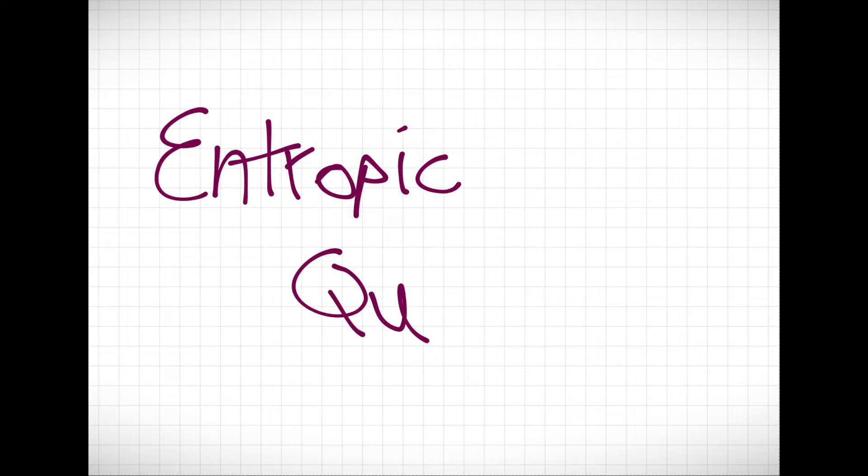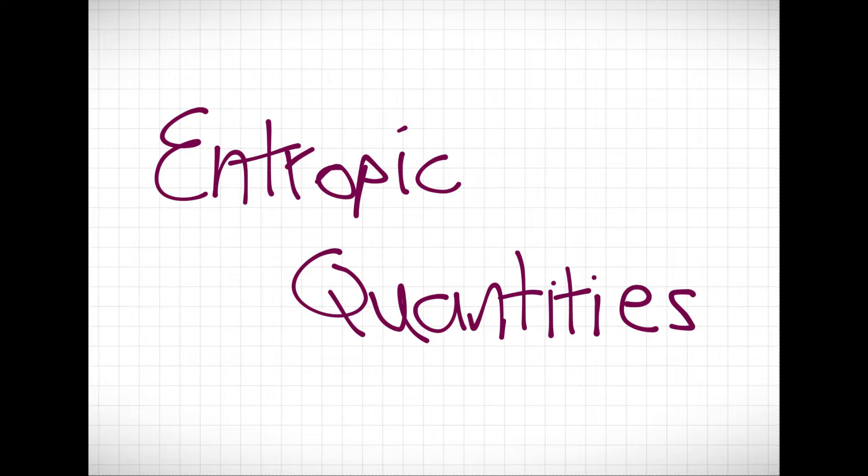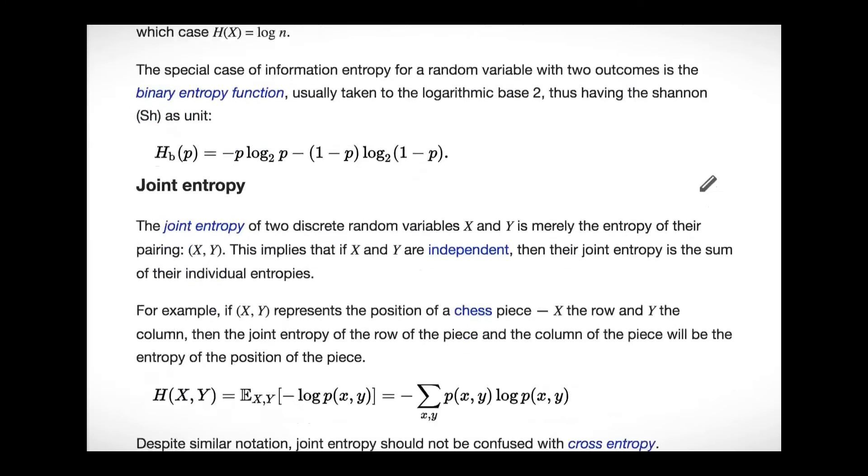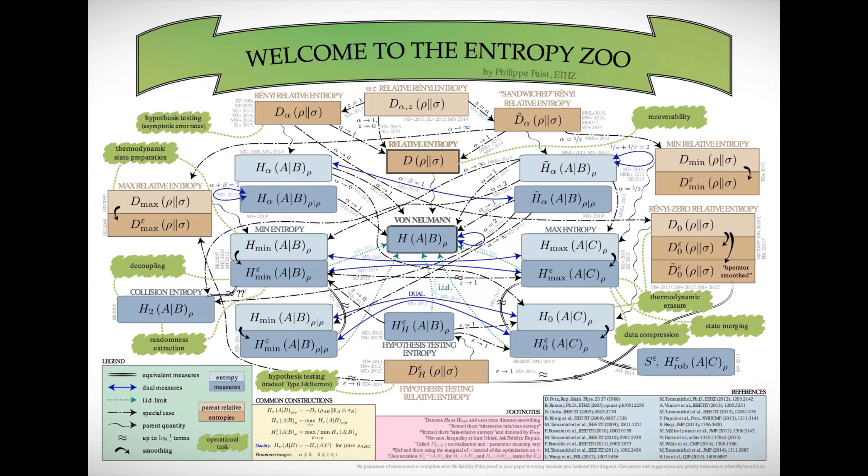Often, the bounds we find on what can be achieved with what amount of resources end up in terms of entropic quantities. These are mathematical functions of the original source of information, and there are a lot of them.